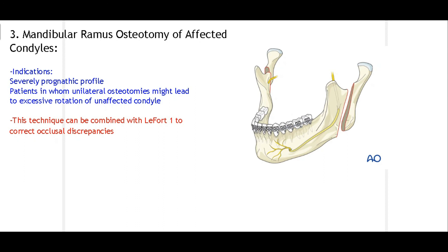The third treatment option is mandibular ramus osteotomy of the affected condyle, indicated for patients with a severe prognathic profile — where the mandible is positioned anteriorly to the maxilla — or in patients with excessive rotation of the unaffected condyle. This procedure can also be combined with Le Fort I osteotomy to correct occlusal discrepancy.